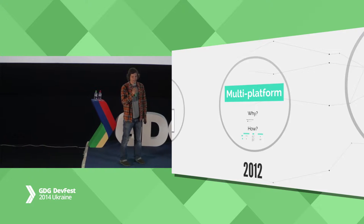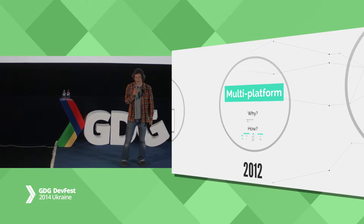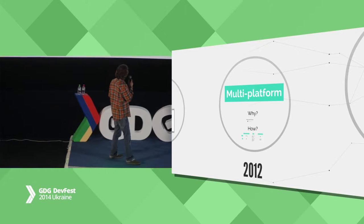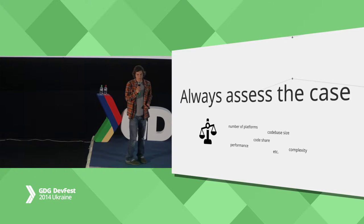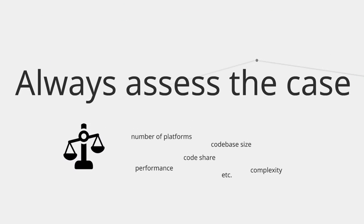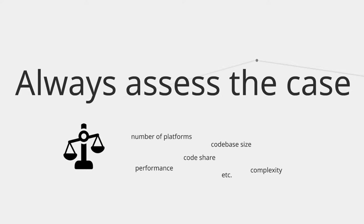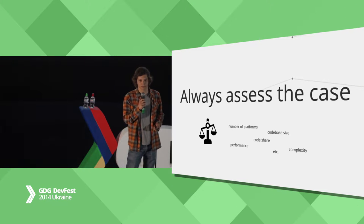By this time we already had a multi-platform application. If you want a multi-platform application, always ask yourself first if this is something you really want to do, because there are always pros and cons. You should check how many platforms you want to be on, how complex your code base is, what the performance requirements are, and how much code you can share. If you only have two applications and they are pretty simple, maybe you don't have to complicate the whole code base.